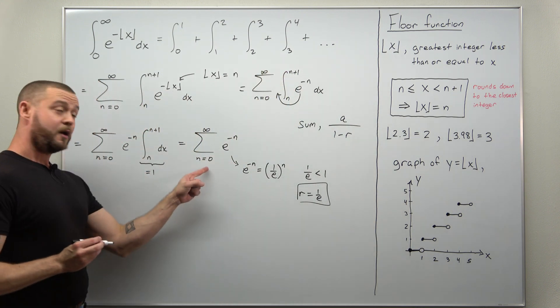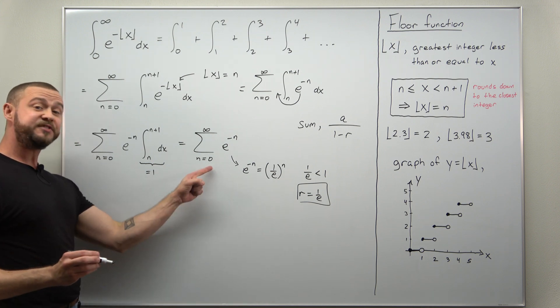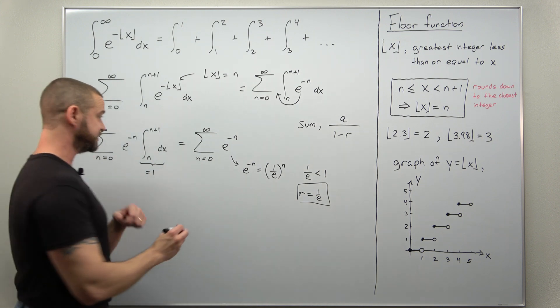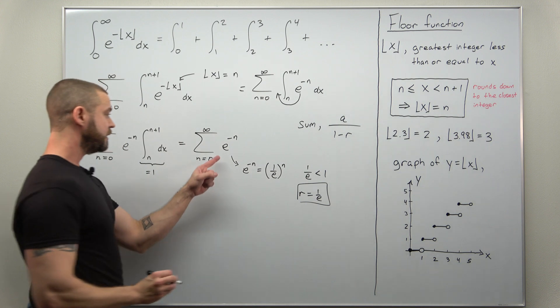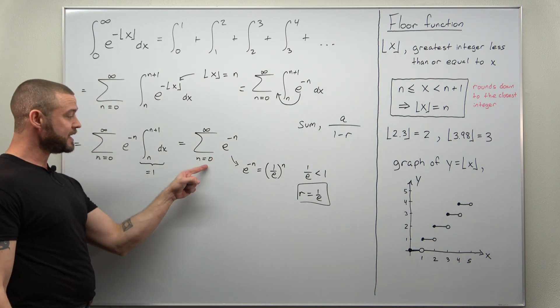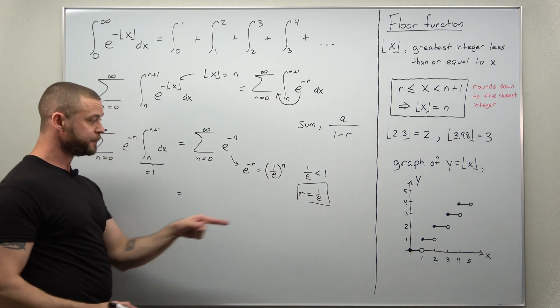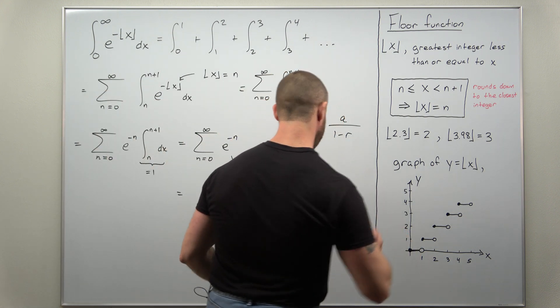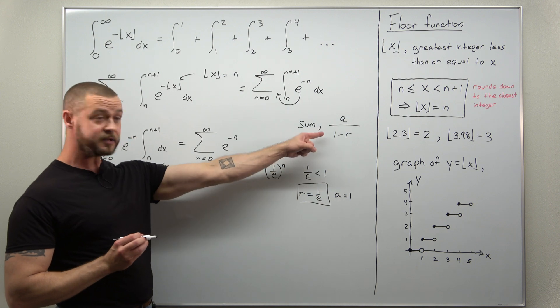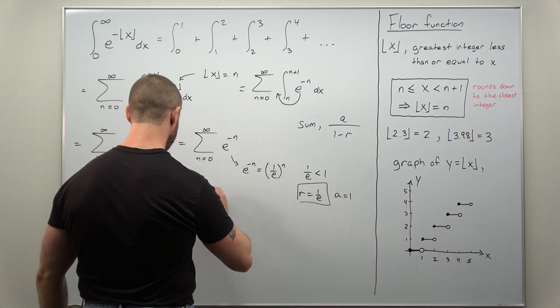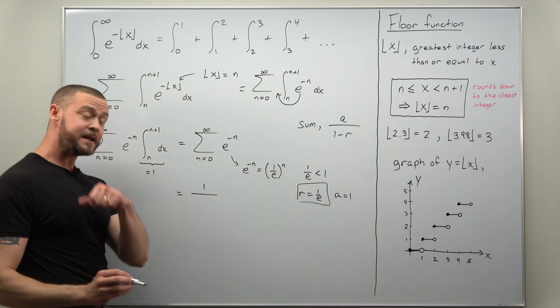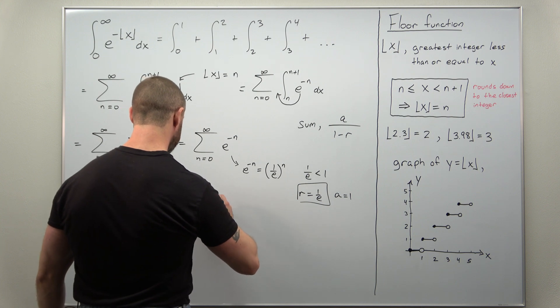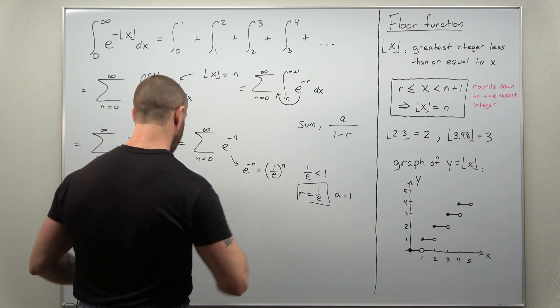So at this point, we now have our sum because this is a convergent geometric series. If you write out terms here, notice when you plug in n equals 0, your first term will be 1. So we'll be using r as 1 over e and a as 1 and we're just going to plug that into the sum formula. We get 1 and then now divided by 1 minus 1 over e.